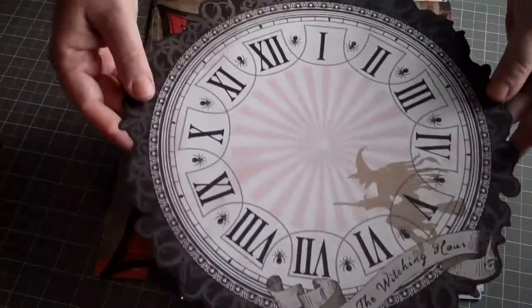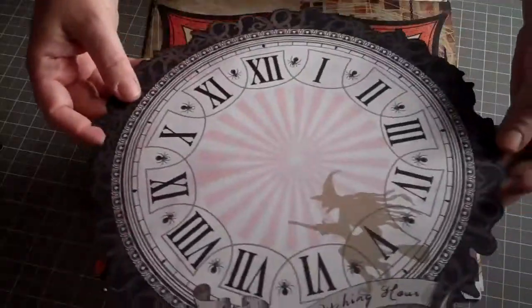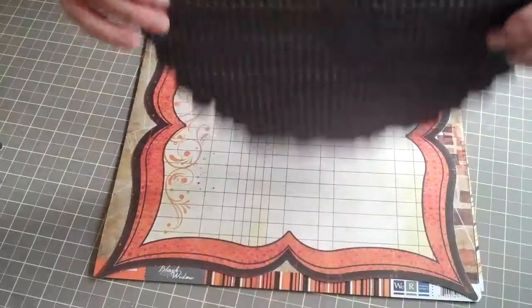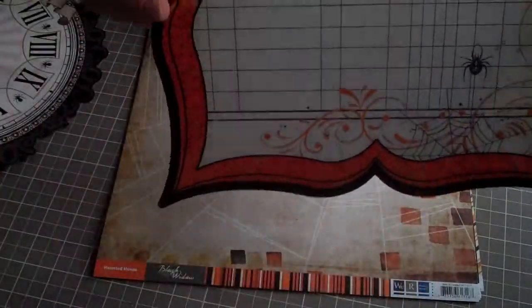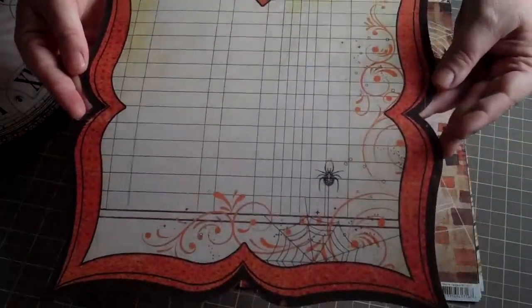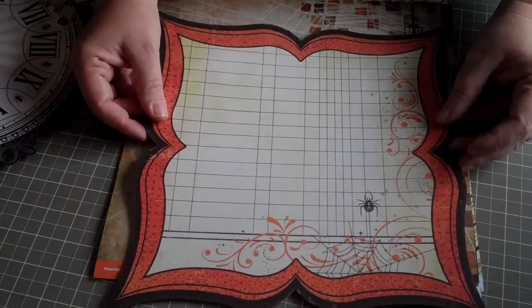First of all, we have the die cut. This is an awesome die cut. I love the witch at the bottom and the clock, and the back side is just a little squiggly pattern. The next die cut we have is a really neat shape, and it has Black Widow over there in the corner, kind of spooky, so perfect for your scrapbook pages with your Halloween photos.